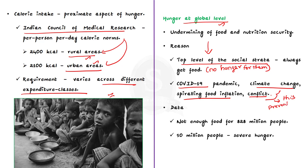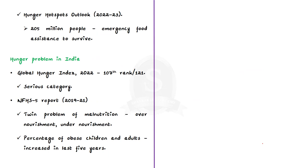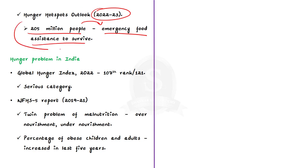As per estimates, today around 828 million people worldwide do not have enough to eat, and over 50 million people are facing severe hunger. The Hunger Hotspot Outlook 2022-23 warns of escalating hunger, with the report stating that over 205 million people across 45 countries will need emergency food assistance to survive. This report is jointly published by the Food and Agriculture Organization of the United Nations and the World Food Programme.